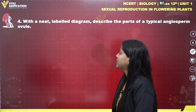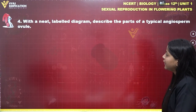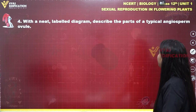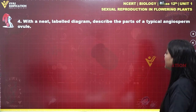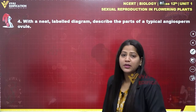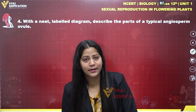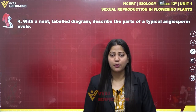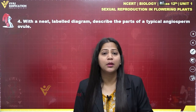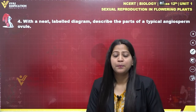Let us come towards question number 4 with a neat labeled diagram: describe the parts of a typical angiosperm ovule. In this question, we have to draw a neat labeled diagram of an ovule and also describe all the parts in detail.